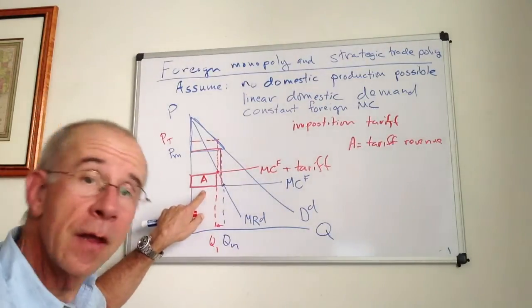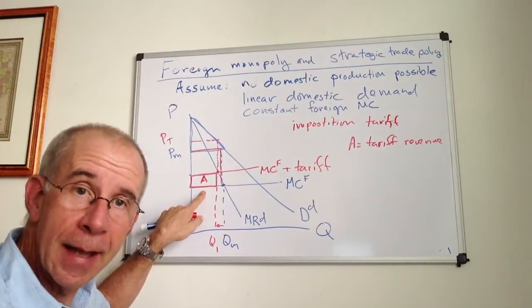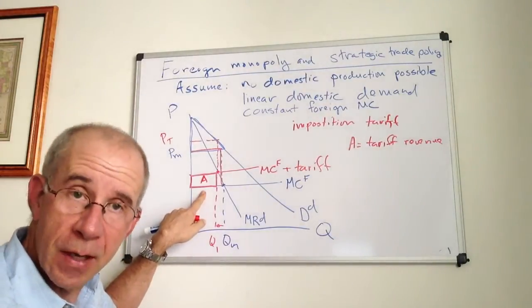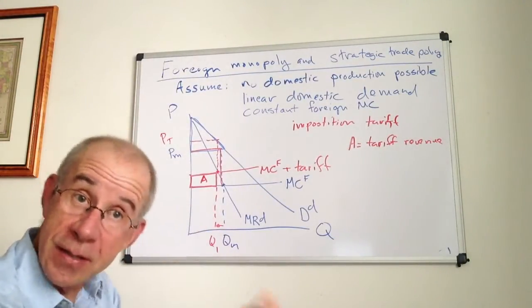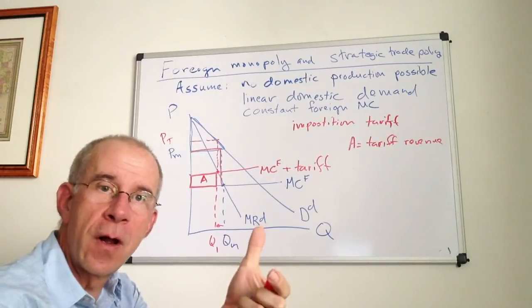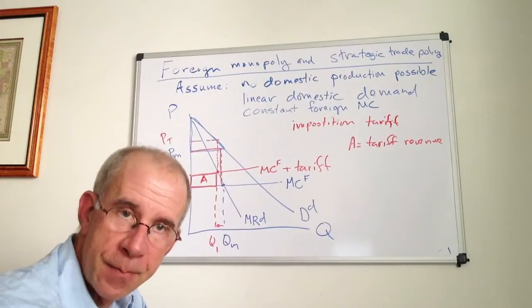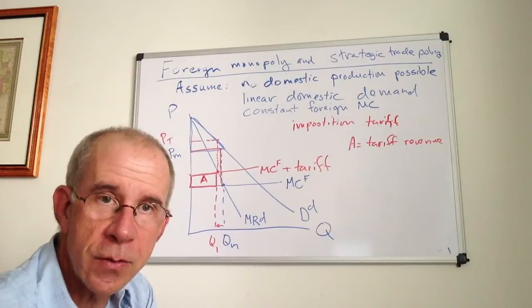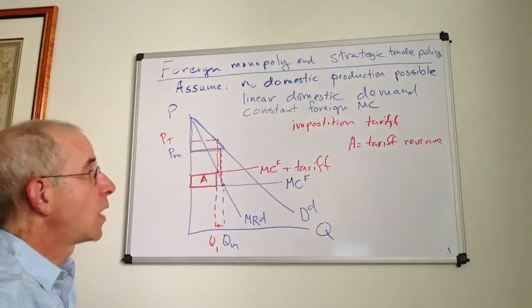Now, they have to pay out of their profits some amount to the domestic government. So that's a transfer from the foreign monopolist to the domestic treasury. So that's a benefit.